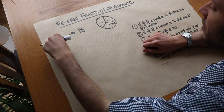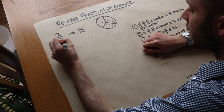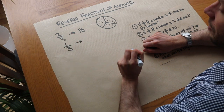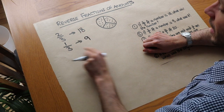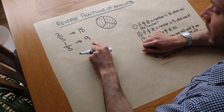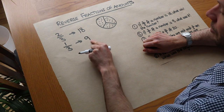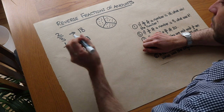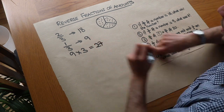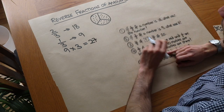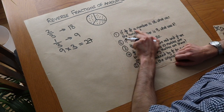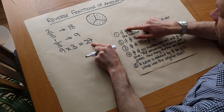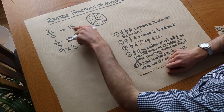Another way of thinking about it: if two-thirds of something is 18, then a third of it would be half as much, which is nine. Now if a third of something is nine, then all of it would be three times bigger — nine times three equals 27. Let's check: two-thirds of 27 is 27 divided by three, which is nine, times two is 18. Correct.